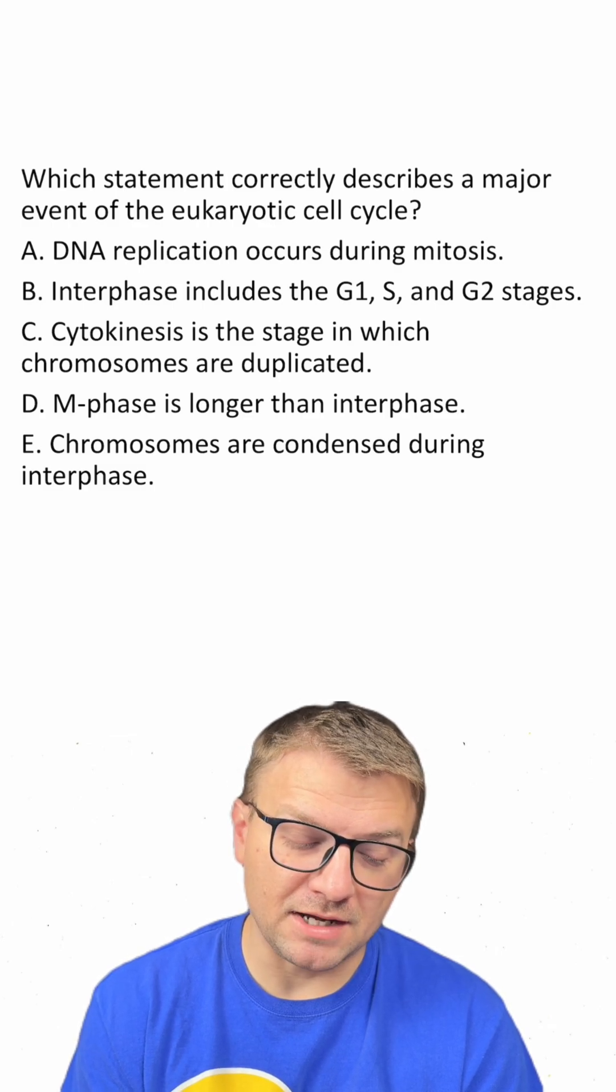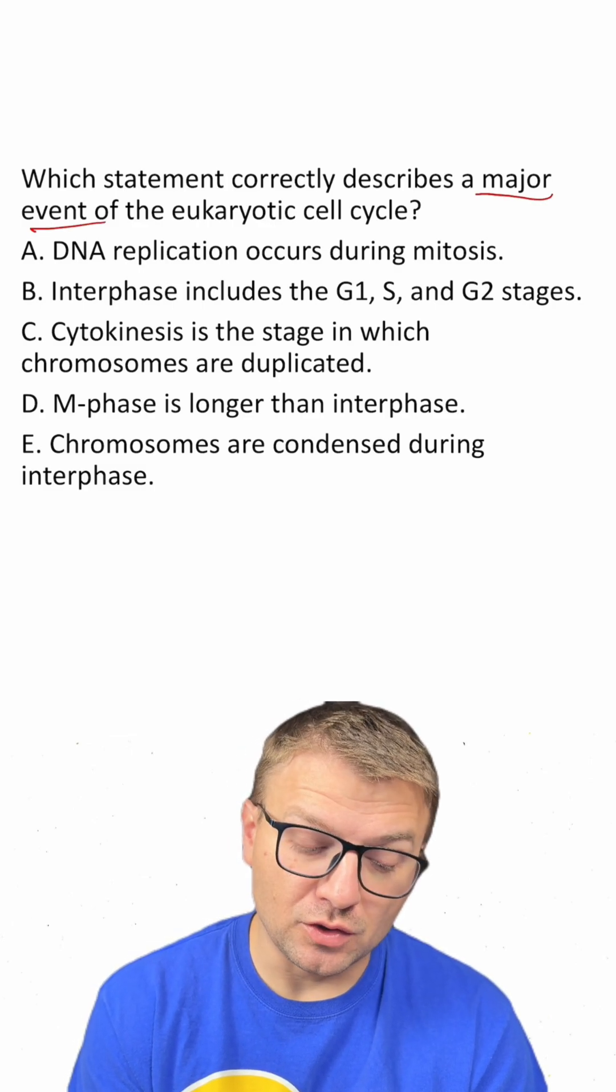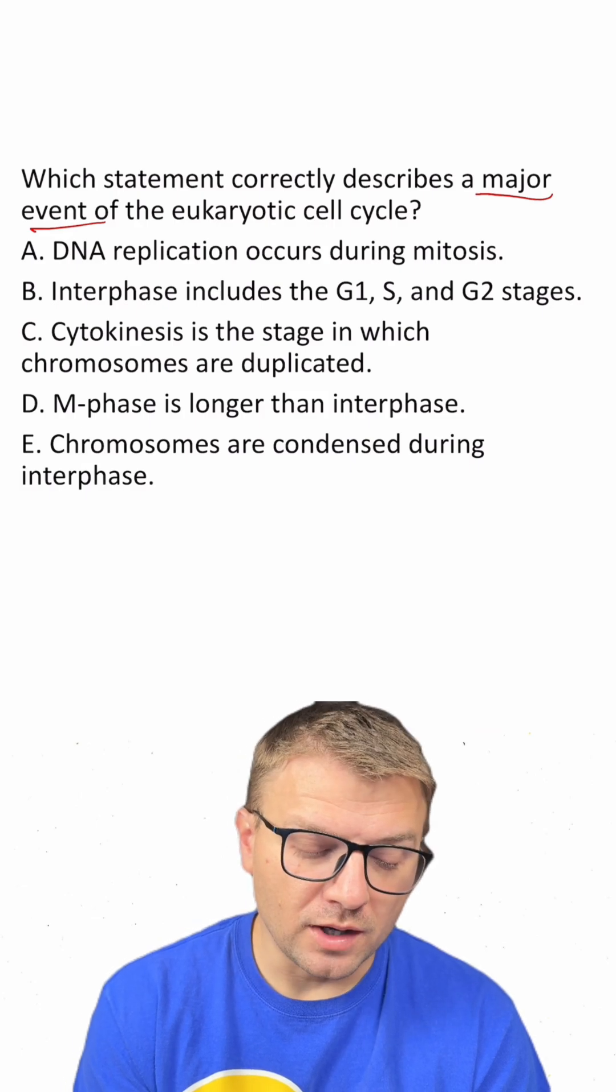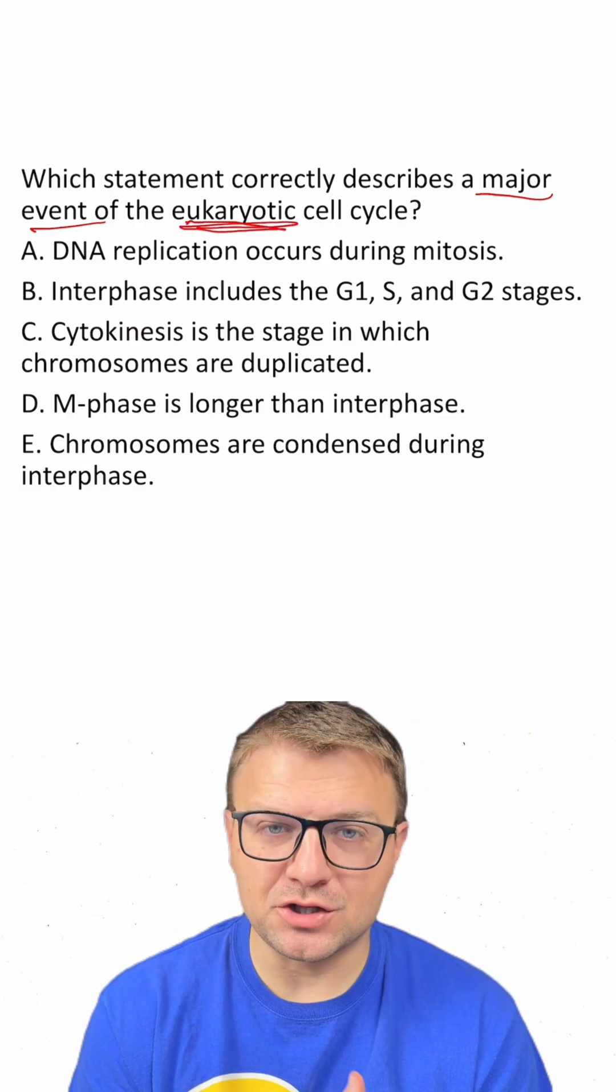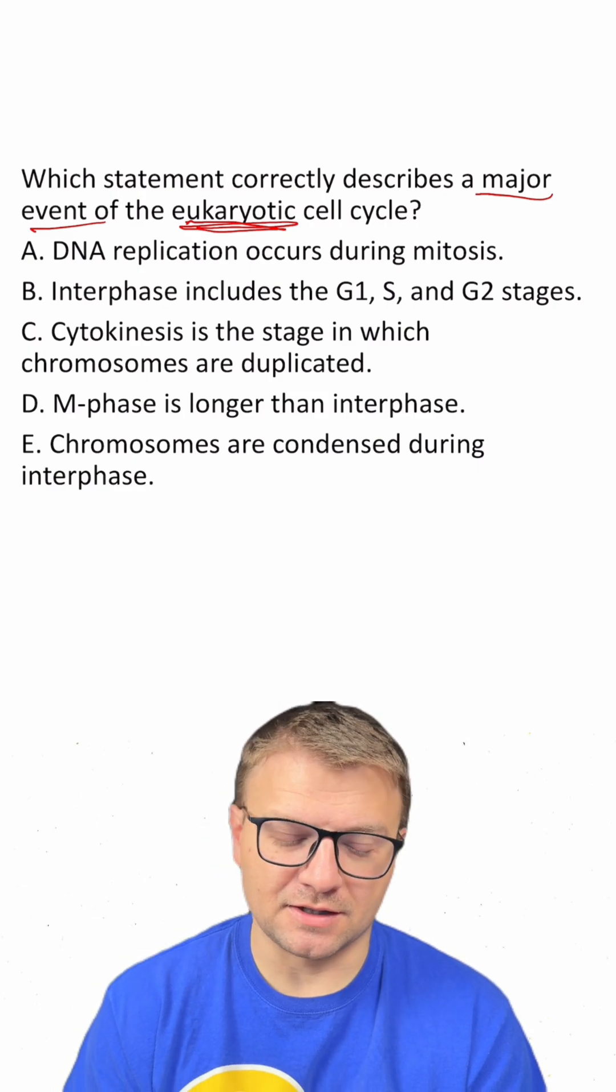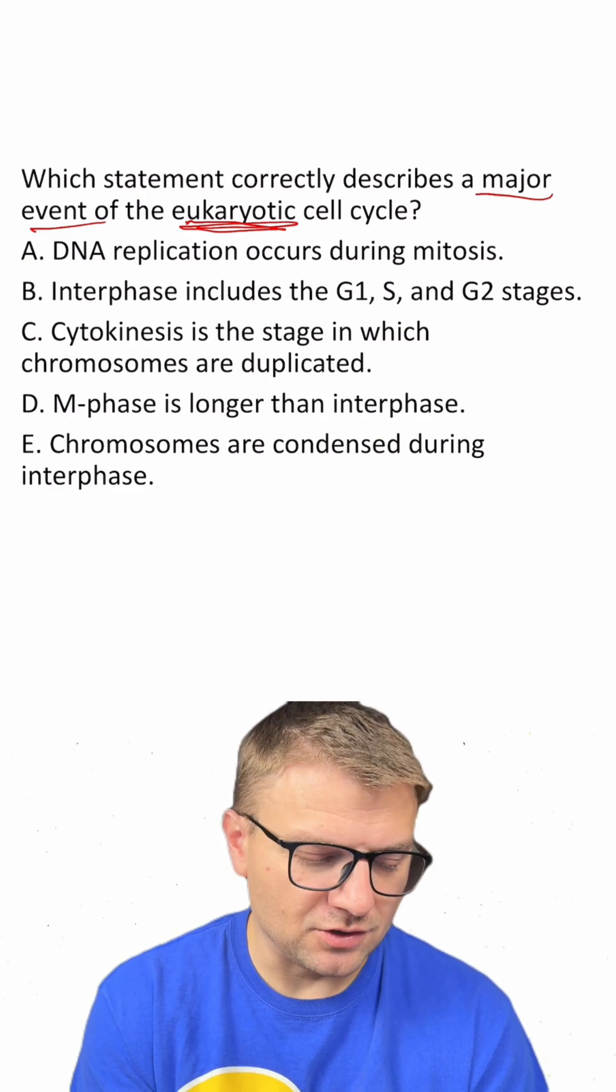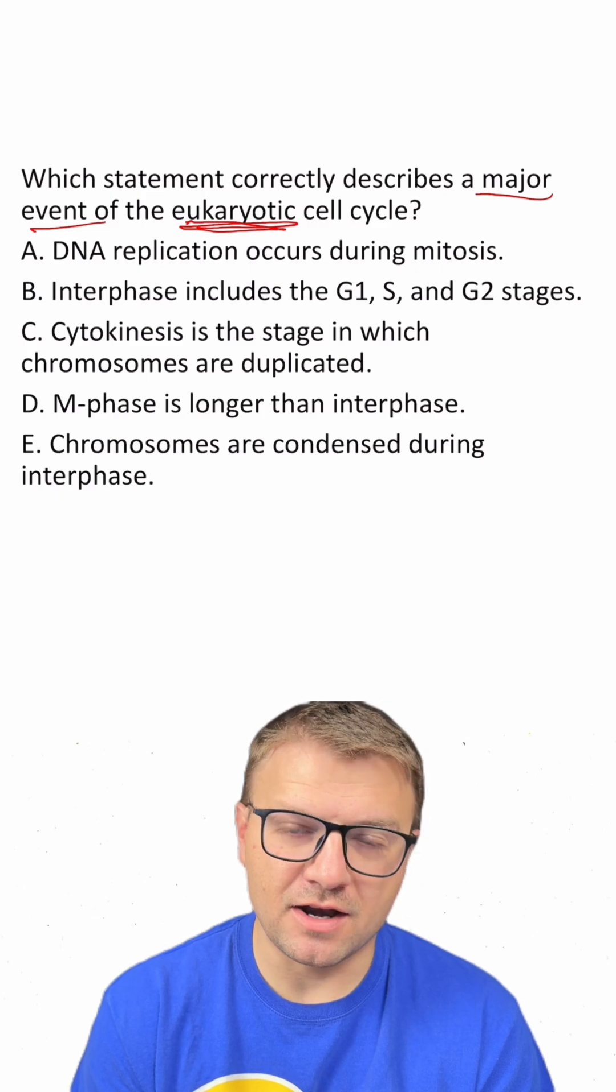Which statement correctly describes a major event of the eukaryotic cell cycle? One part that might be confusing about this question is the term eukaryotic. Remember, that just means cells with a nucleus, basically. So if we take that out, it's just saying which statement correctly describes a major event of the cell cycle?